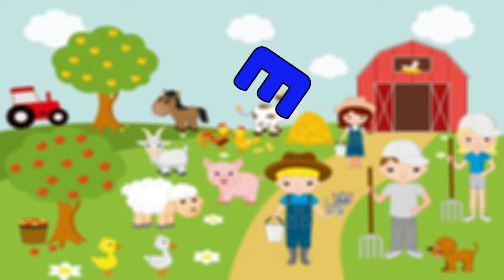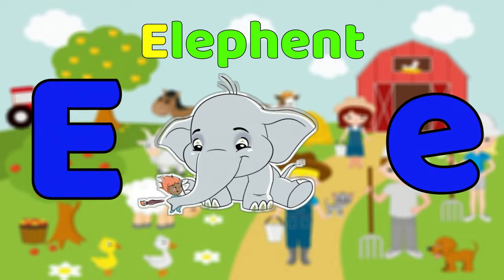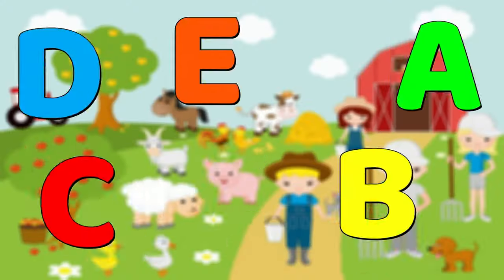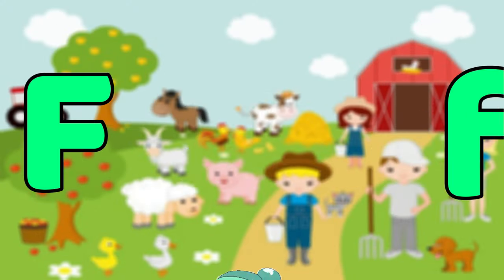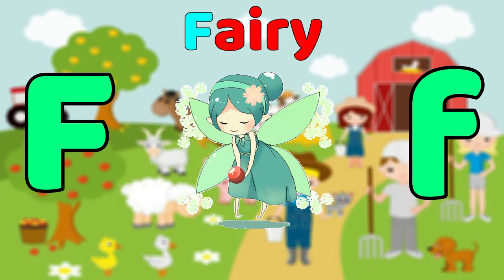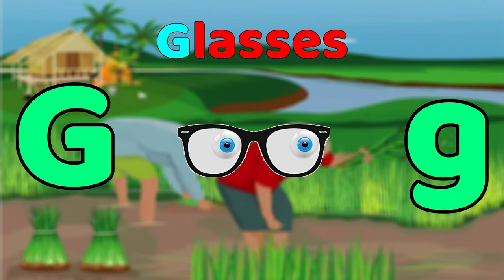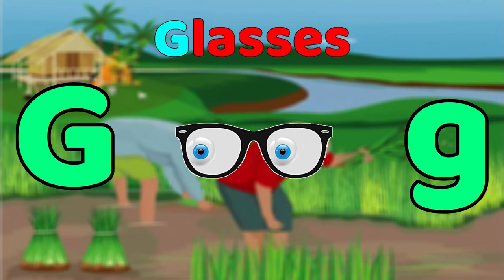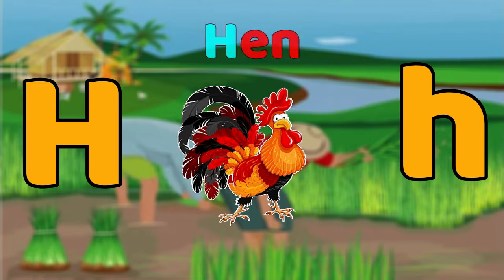E is for Elephant, E-E-Elephant, E-E-Elephant, E-Elephant. F is for Fairy, F-F-Fairy, F-F-Fairy, F-Fairy. G is for Glasses, G-G-Glasses, G-G-Glasses, G-Glasses.